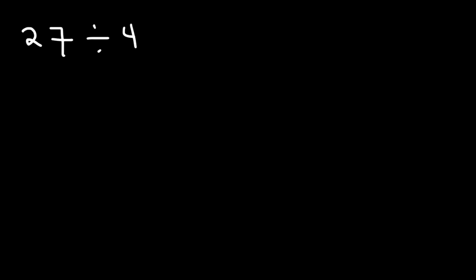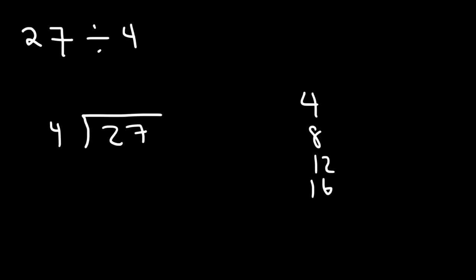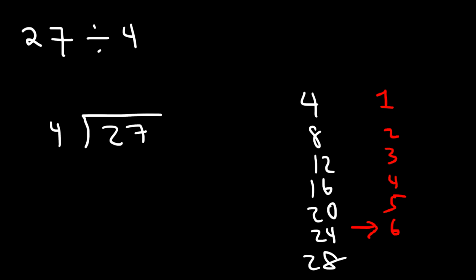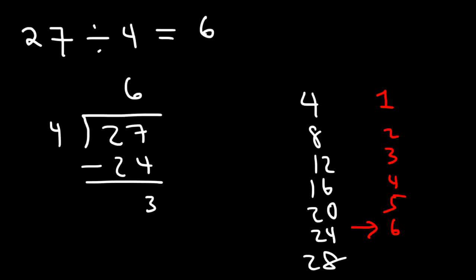Now let's try another example: what is 27 divided by 4? Write your answer with a quotient and remainder and also as a decimal. So 27 is the dividend and 4 is the divisor. Making a list: 4, 8, 12, 16, 20, 24, 28 — we stop here because 28 exceeds 27. So 4 goes into 27 six times; 4 times 6 is 24, and 27 minus 24 is 3. We can say 27 divided by 4 is 6 with a remainder of 3.